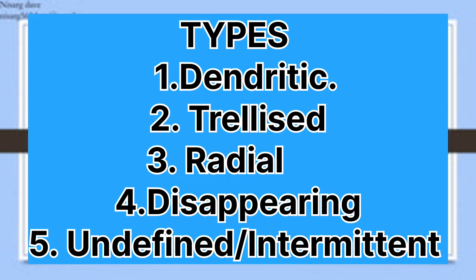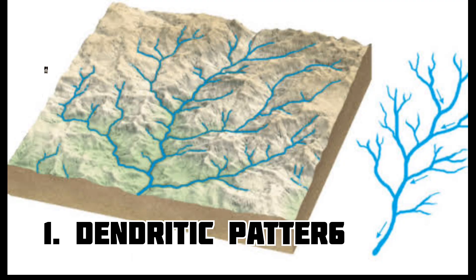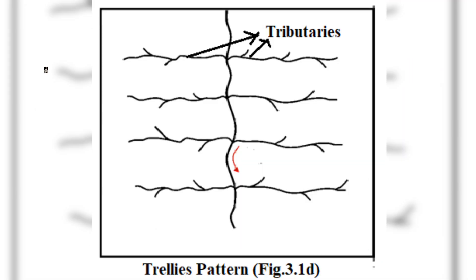There are many types of drainage patterns: dendritic, trellis, radial, disappearing, and undefined or intermittent streams. However, the major drainage patterns are dendritic, trellis, and radial.